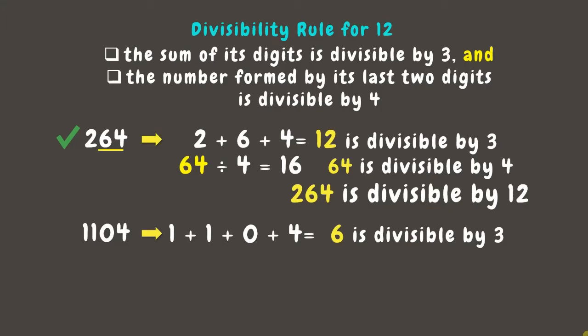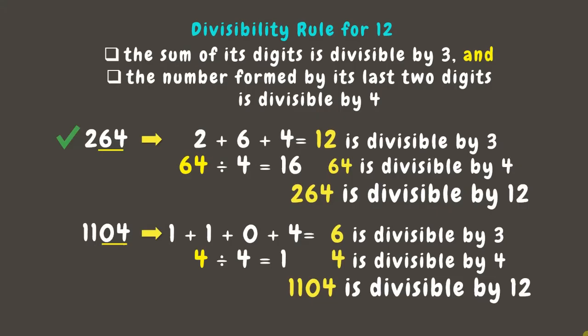Next, let's check if the number formed by its last two digits is divisible by 4. Here, the last two digits form the number 4. If we divide this by 4, the result is 1 with no remainder. Therefore, it is divisible by 4. Since 1104 is divisible by 4 and 3, therefore, it is also divisible by 12.